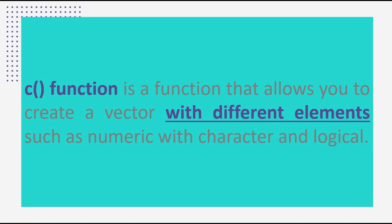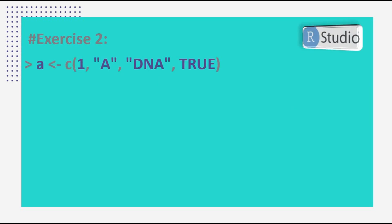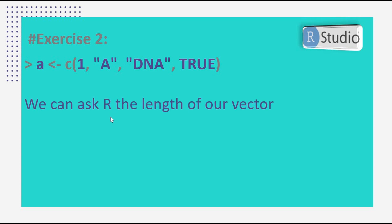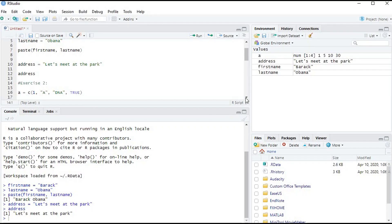In Exercise 2, for example, we want to assign a vector containing different data types — numeric, character, and logical — using the c() function. We can also ask R for the length of our vector by writing length(a), and we get 4.